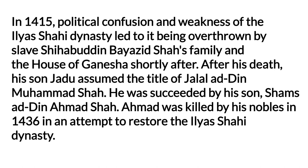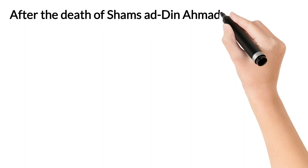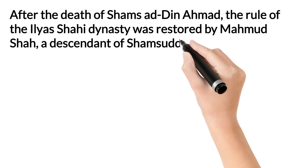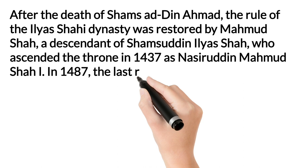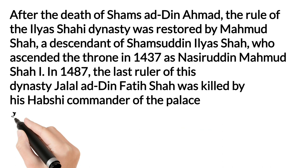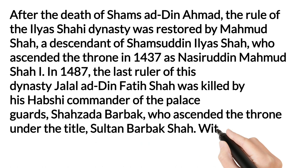After the death of Shams ad-din Ahmad, the rule of the Ilyas Shahi dynasty was restored by Mahmud Shah, a descendant of Shamsuddin Ilyas Shah, who ascended the throne in 1437 as Nasiruddin Mahmud Shah I in 1487. The last ruler of this dynasty, Jalal ad-din Fati Shah, was killed by his Habshi commander of the palace guards, Shahzada Babak, who ascended the throne under the title Sultan Babak Shah. With this, the Ilyas Shahi dynasty's rule over Bengal came to an end.